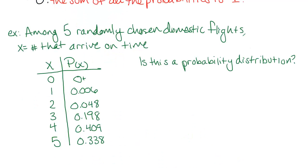So we have an example here. We're looking at five randomly chosen domestic flights. And our random variable is the number of those that arrive on time. So since there's only five flights, our possibilities are zero through five. And this table here is telling us the probability of each one of these outcomes. So the first question we would ask is, is this a probability distribution?